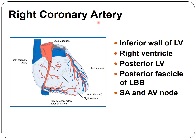The right coronary artery supplies the inferior wall of the left ventricle, the right ventricle, the posterior part of the left ventricle, the posterior fascicles of the left bundle branch, and the sinus node and AV node as well.